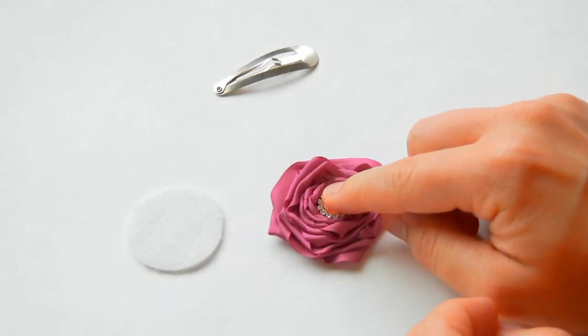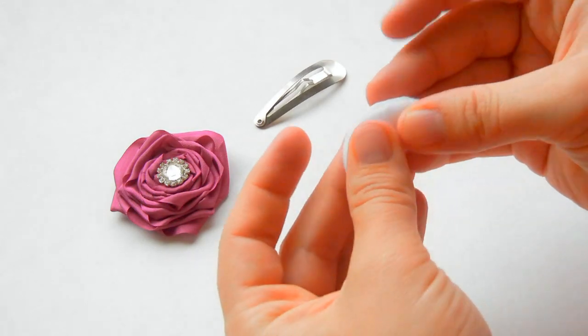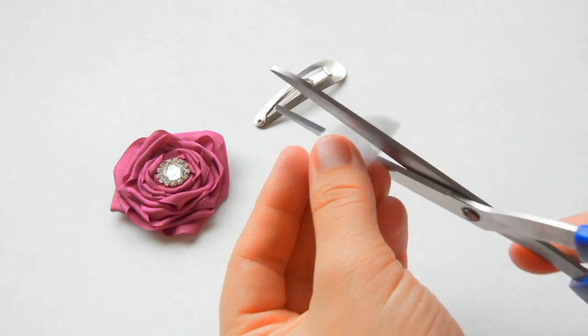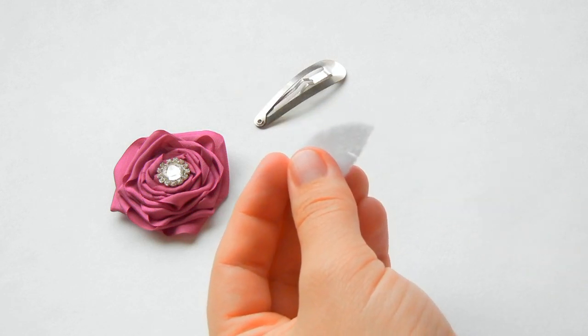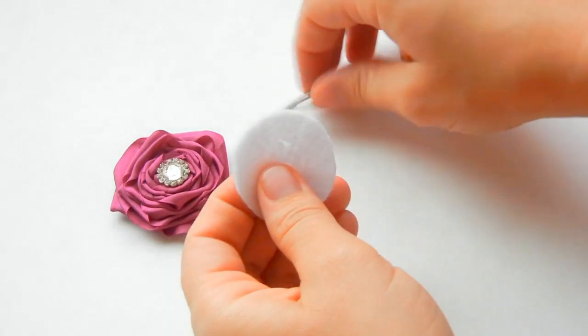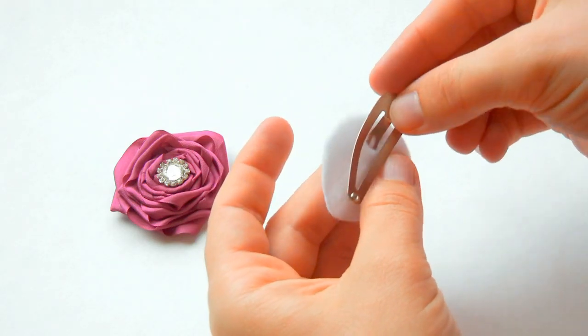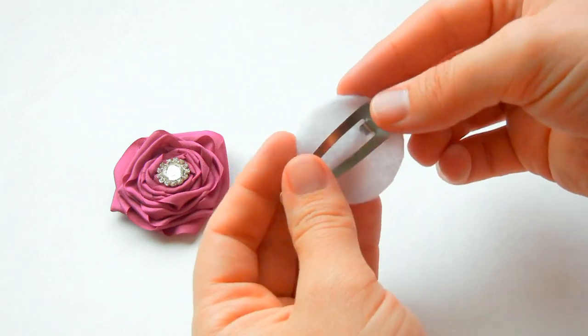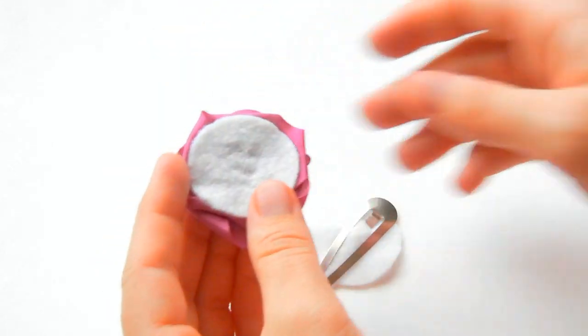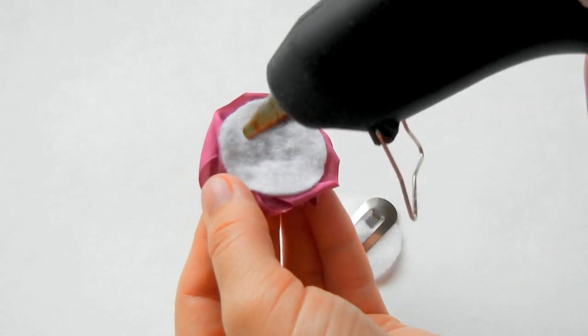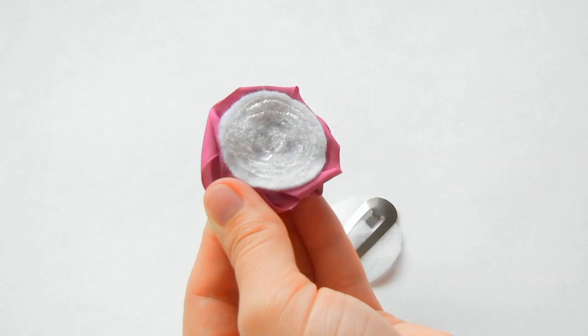Now we just need to add our clip. Take your other felt circle and fold it in half. You can see I'm going to cut right there on one end of the felt circle. Take your clip, open it up, and slide the bottom of it in. Then you close it. Now we're going to place hot glue on the back of the felt circle, and this will sandwich in that snap clip.